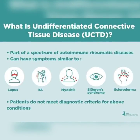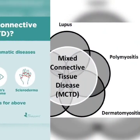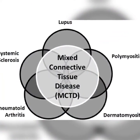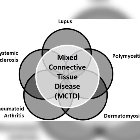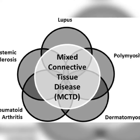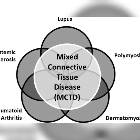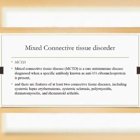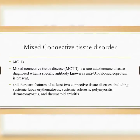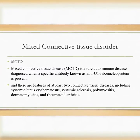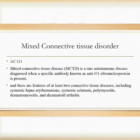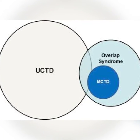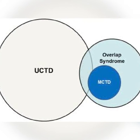Now we move on to Mixed Connective Tissue Disorder. Mixed Connective Tissue Disease, or MCTD, is a rare autoimmune disease diagnosed when a specific antibody known as anti-U1 ribonucleoprotein is present, and there are features of at least two connective tissue diseases, including systemic lupus erythematosus, systemic sclerosis, polymyositis, dermatomyositis, and rheumatoid arthritis.